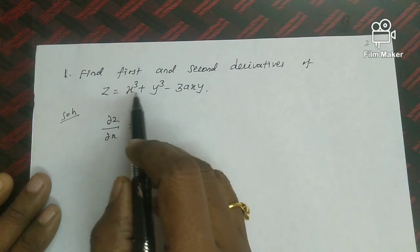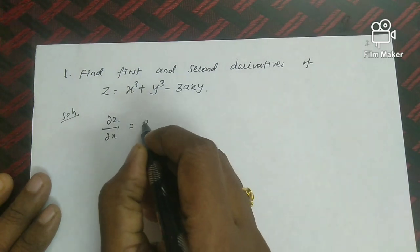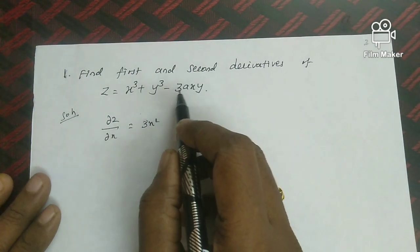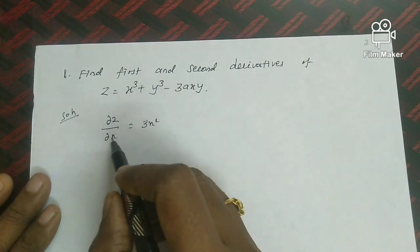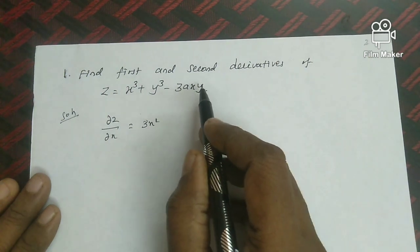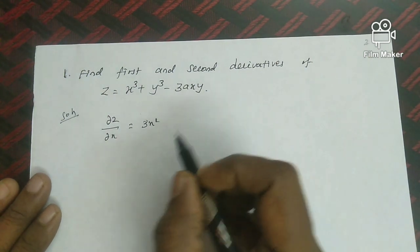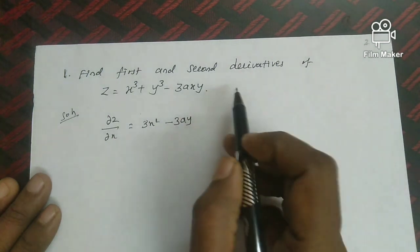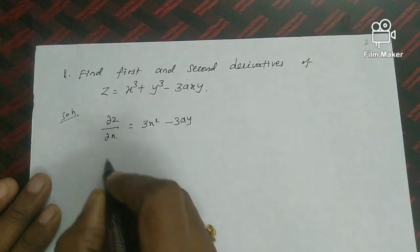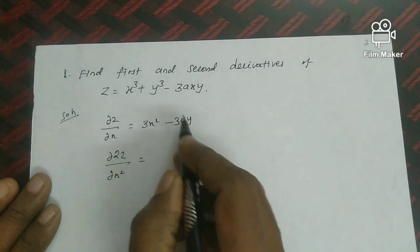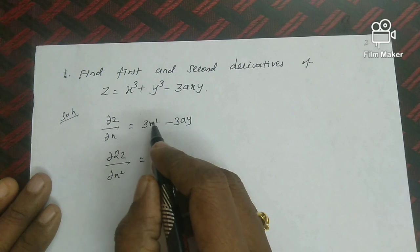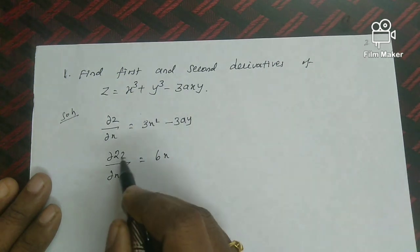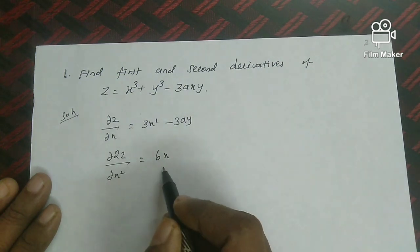Computing ∂z/∂x with y treated as constant: differentiating x³ gives 3x², differentiating y³ with respect to x gives 0, and differentiating -3axy gives -3ay. So ∂z/∂x = 3x² - 3ay. Then the second derivative ∂²z/∂x² is obtained by differentiating again with respect to x, giving 6x.